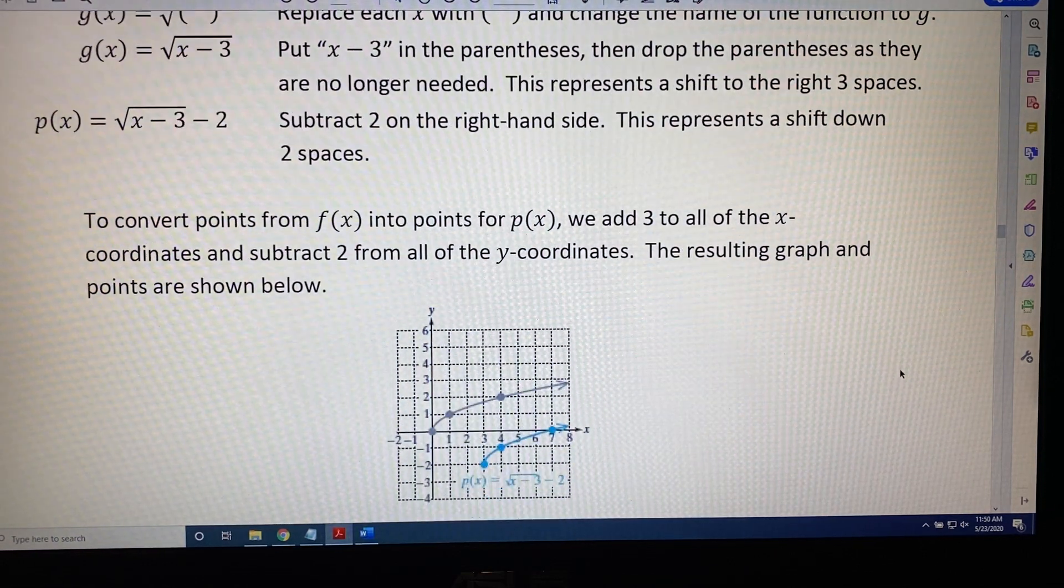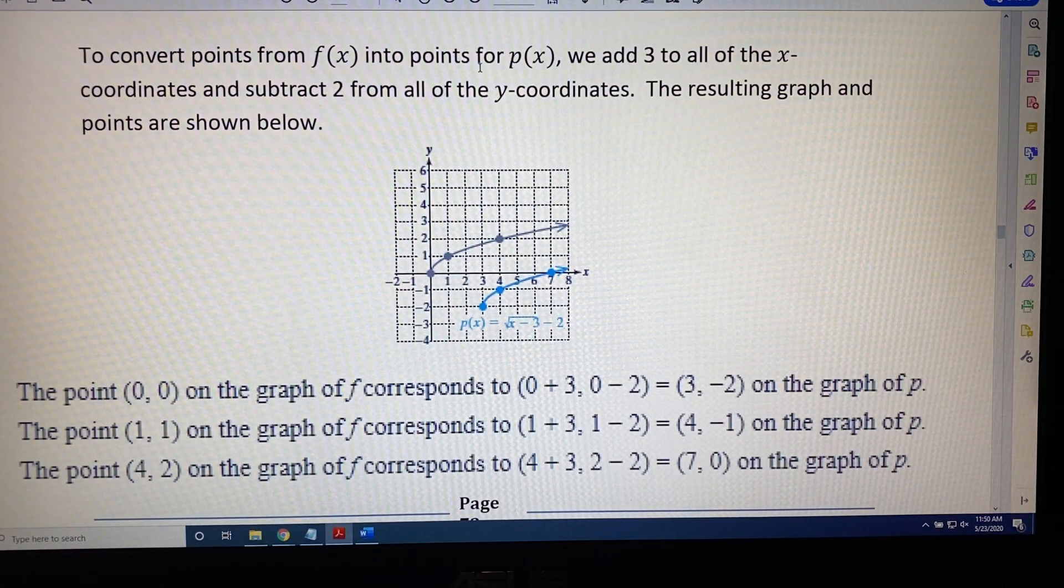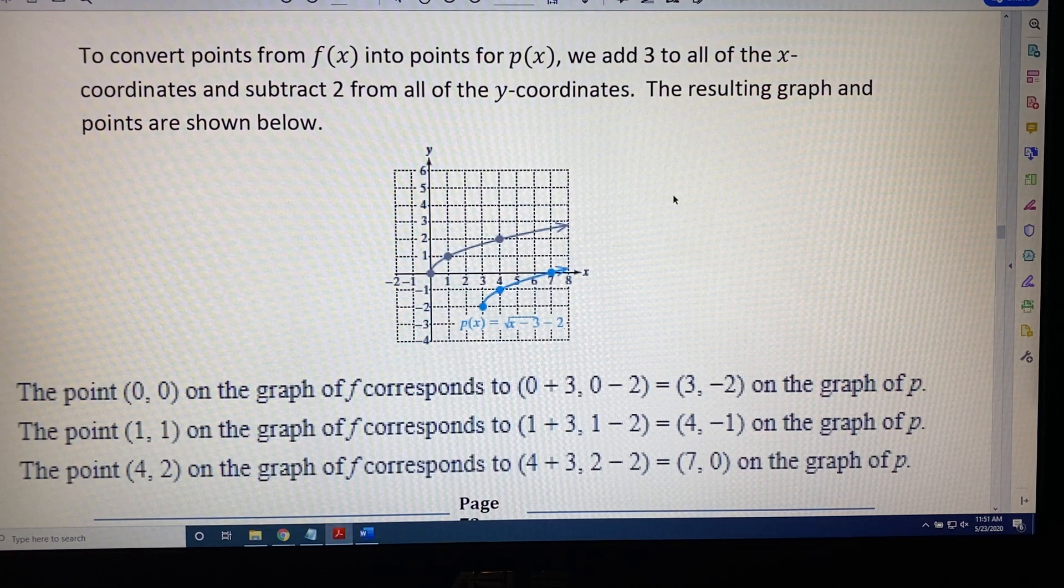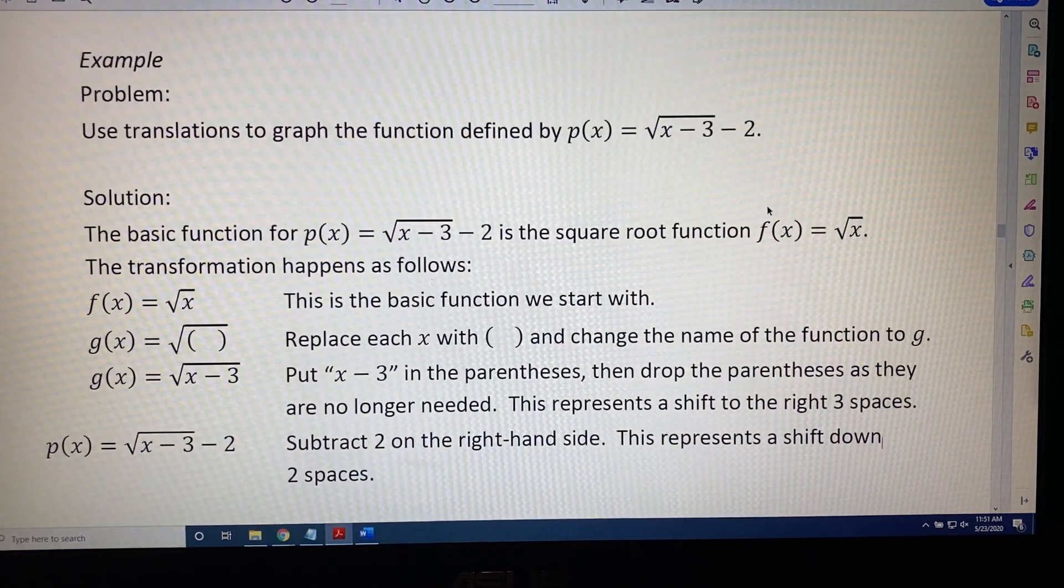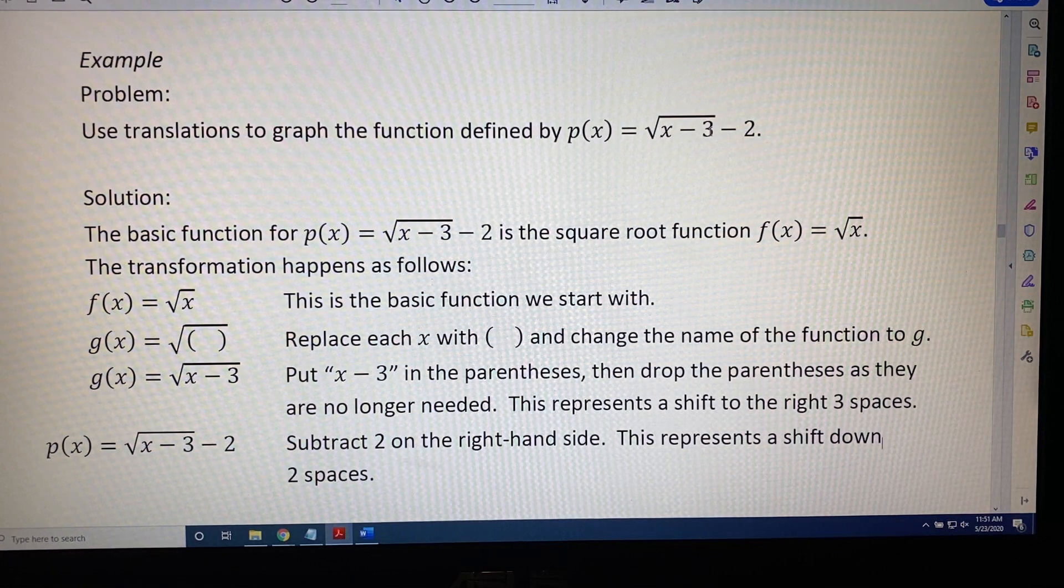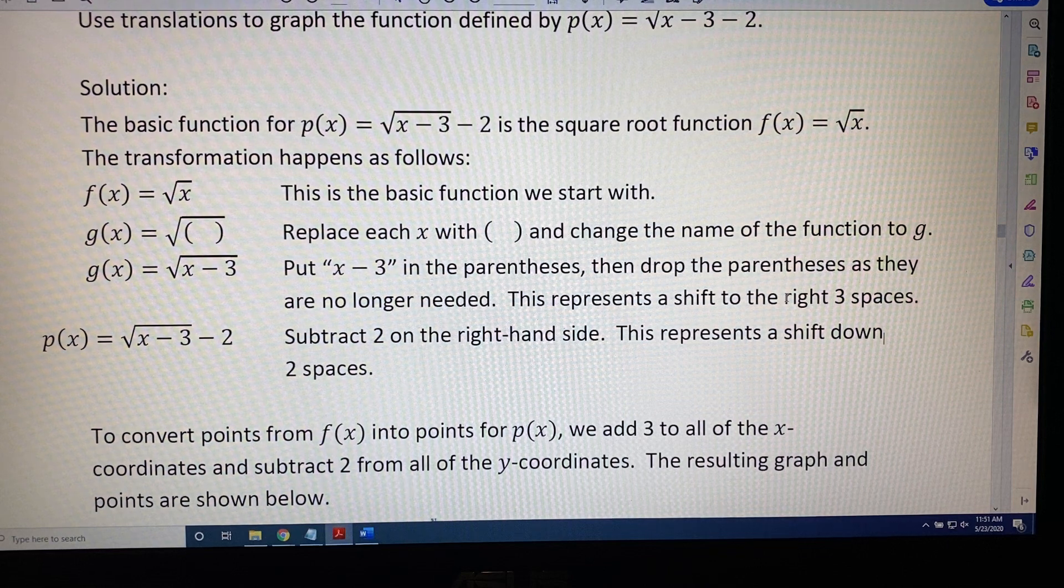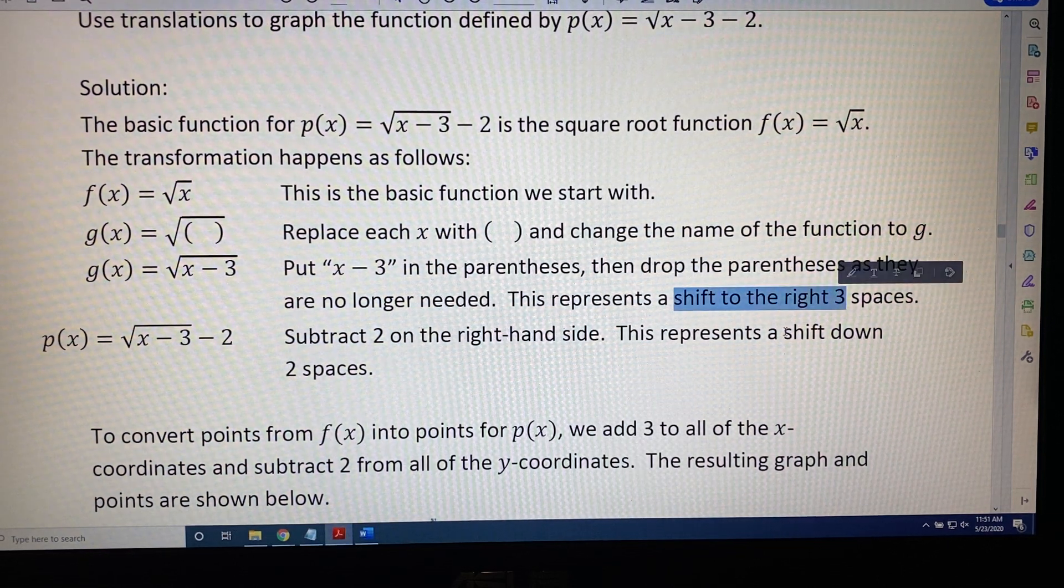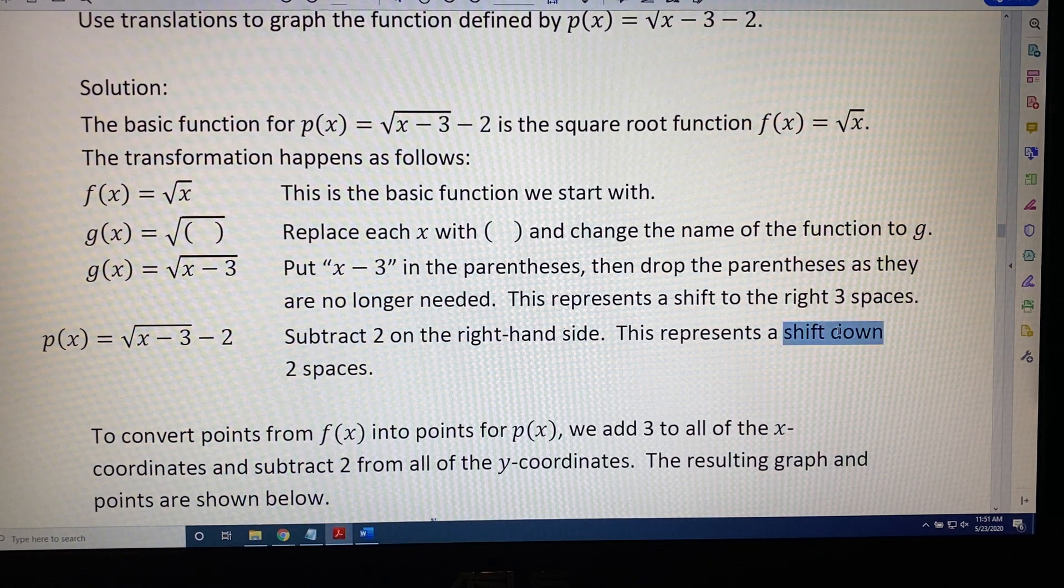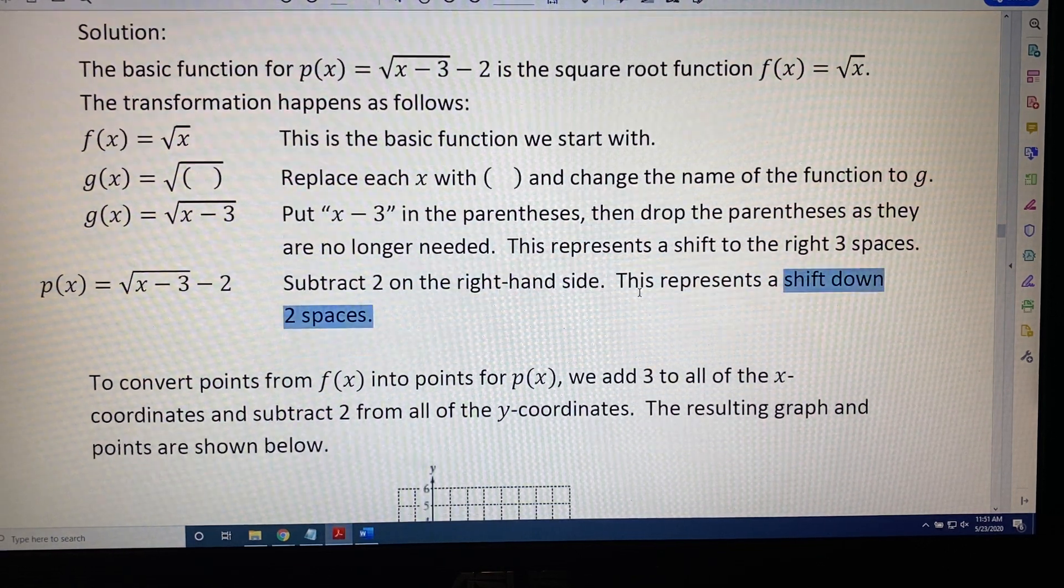Now to the ordered pairs. To convert points from f(x) into points for p(x), we have to remember what we are being asked to do. In this problem it says x minus 3 subtract 2, and we've observed that this represents a shift to the right three spaces and a shift down two spaces. Remember that: right three, down two.